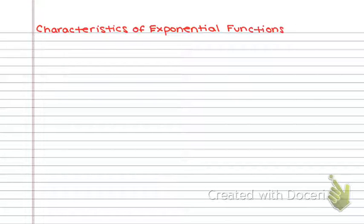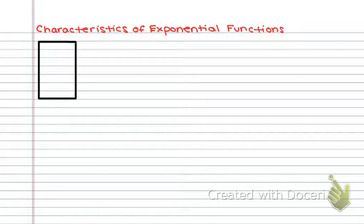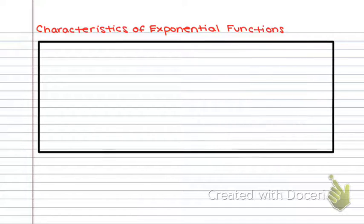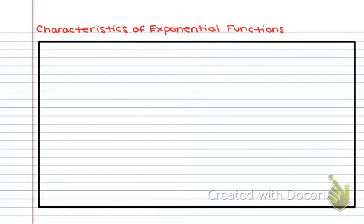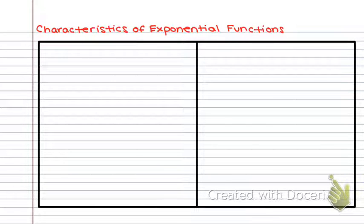For those of you asking when is this going to matter — it's mattering to you right now. There are actually two types of exponential function graphs: a growth function and a decay function. On our sheet of notebook paper, we're going to draw a box and split it in half so we can talk about the different types. The first one is called an exponential growth function.